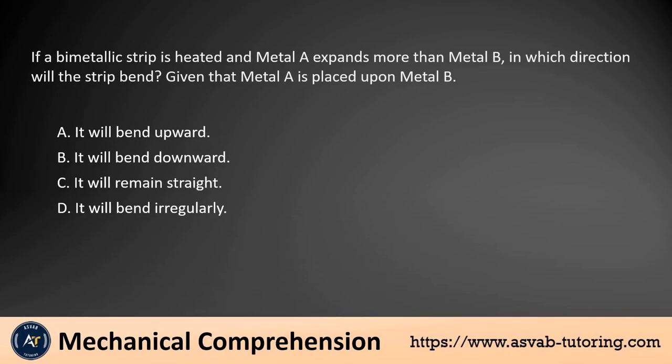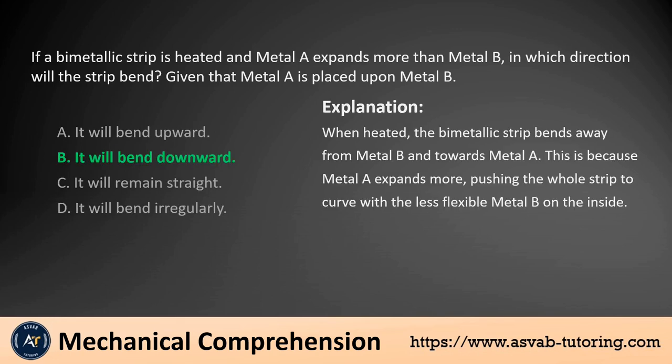If a bimetallic strip is heated and metal A expands more than metal B, in which direction will the strip bend, given that metal A is placed upon metal B? A. It will bend upward. B. It will bend downward. C. It will remain straight. D. It will bend irregularly. The answer is B. When heated, the bimetallic strip bends away from metal B and towards metal A, because metal A expands more, pushing the whole strip to curve with the less flexible metal B on the inside.